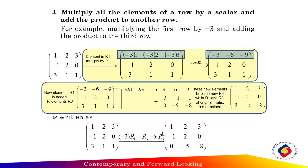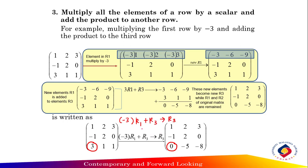For example, we want to change row three while R1 and R2 remain unchanged. Our objective is to change the three in row three to zero. We multiply all the elements of row one by scalar negative three — that is, negative three times row one — and add the product to row three to get a new row three.